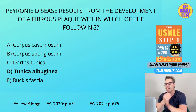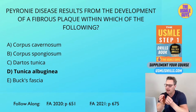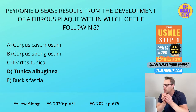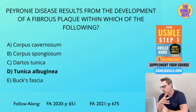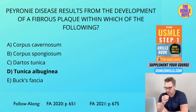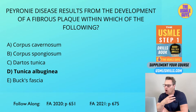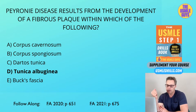Peyronie disease is characterized by an abnormal curvature of the penis. This occurs as a result of a fibrous plaque within the tunica albuginea, which is the fibrous envelope extending the length of the corpus cavernosum and the corpus spongiosum. Something that many students don't remember is that this could actually occur as a result of repeated intercourse-related trauma, so you'll always want to look for that in your vignette.